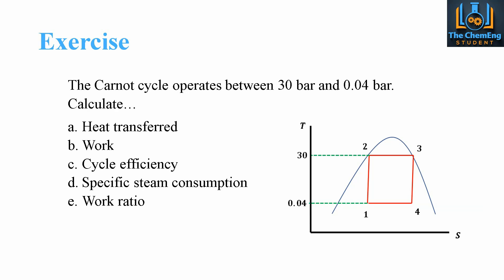Now let's look at a working exercise. We have a Carnot cycle that operates at 30 bar and 0.04 bar. Using the TS diagram with these pressures, we can determine the corresponding temperatures and need to find: the heat transferred, the work, the cycle efficiency, the specific steam consumption, and the work ratio.